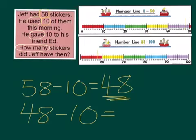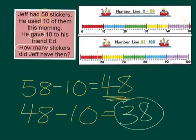Let's use a number line to figure that out. So starting at 48, then count back 10, go all the way to 38. So how many stickers did he have left? He had 38. That is a two-step problem because we had to do two number sentences to figure that one out.